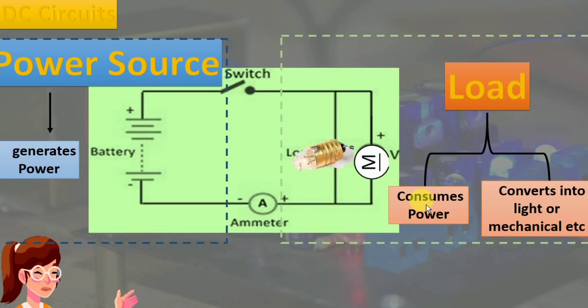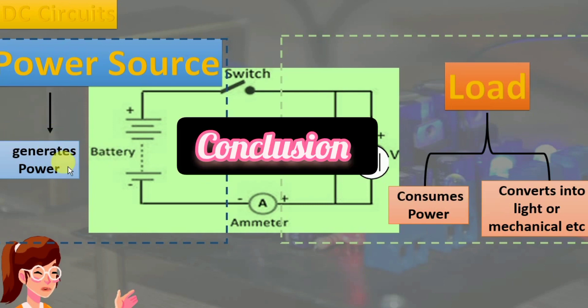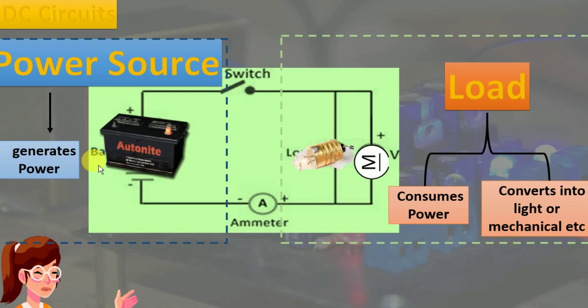In conclusion, a simple DC circuit consists of one or more loads and a current source such as a battery. Each load takes electrical energy that it receives and converts it into a different kind of energy, such as heat and light energy from a light bulb, and mechanical work and heat from an electrical motor.